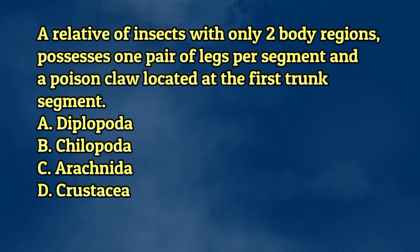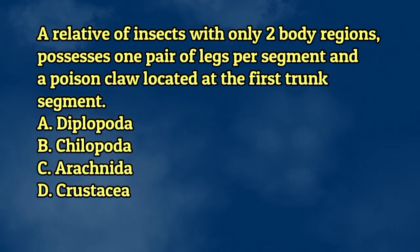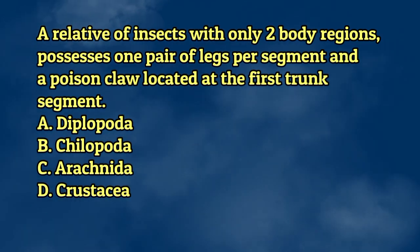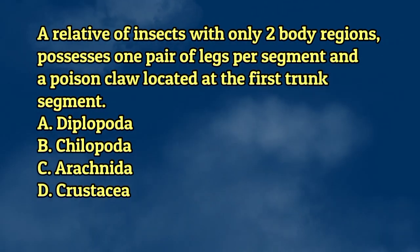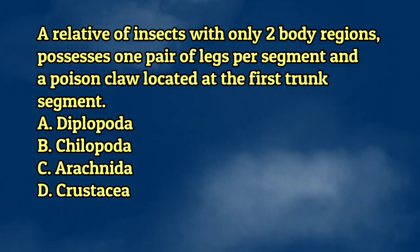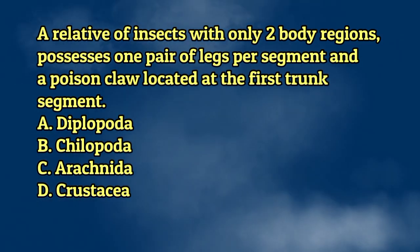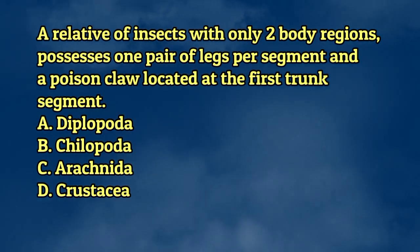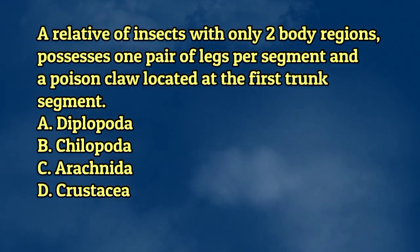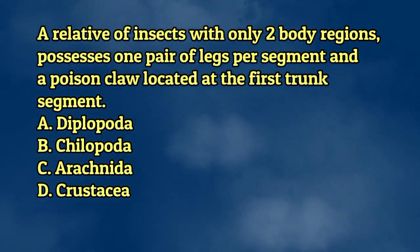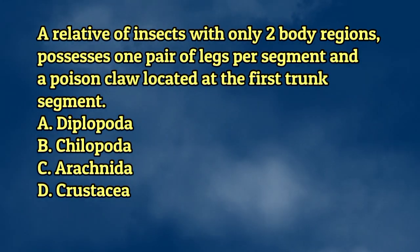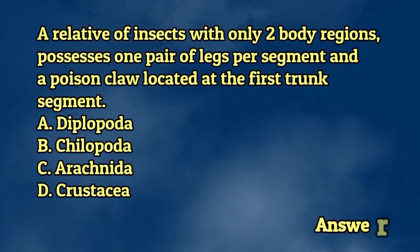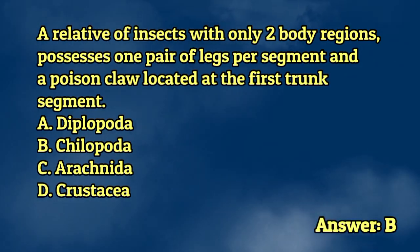A relative of insects with only two body regions, possesses one pair of legs per segment, and a poison claw located at the first trunk segment. A. Diplopoda. B. Chilopoda. C. Arachnida. D. Crustacea. The answer is letter B.